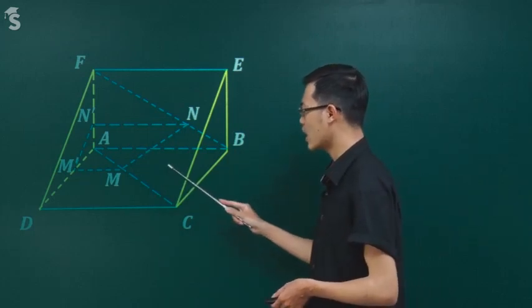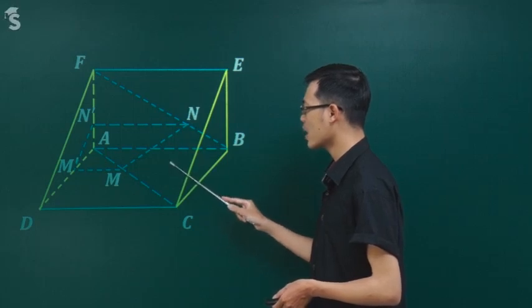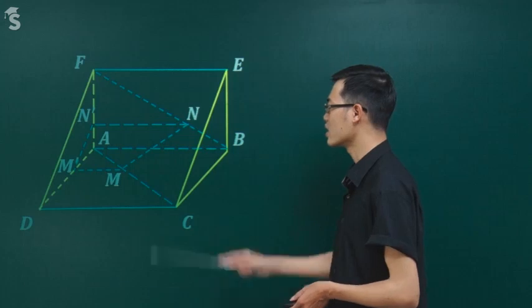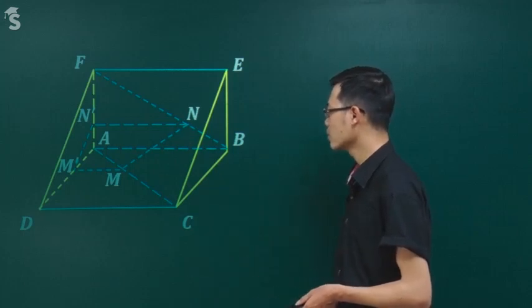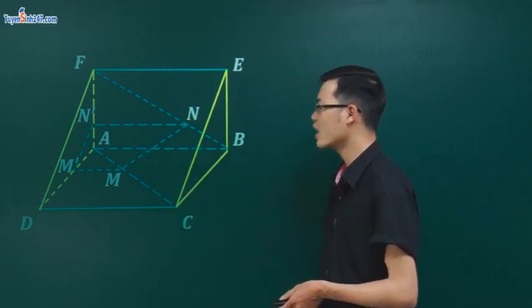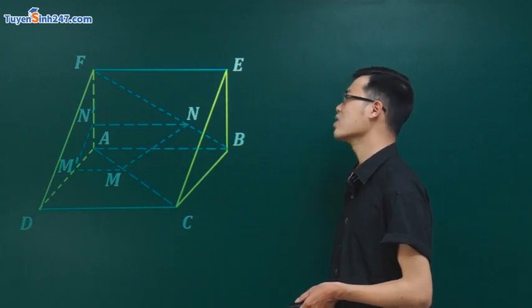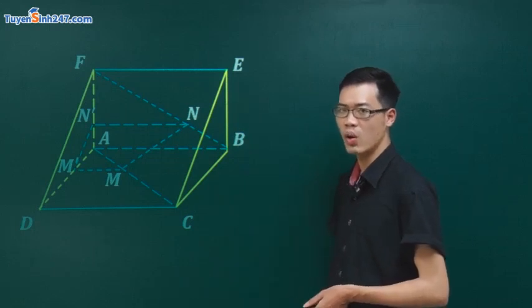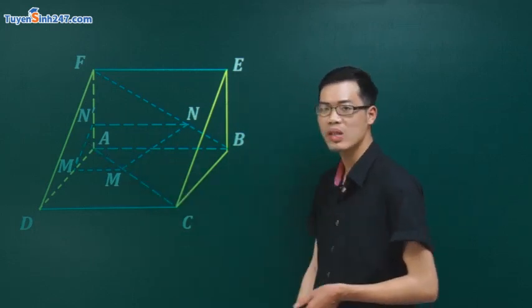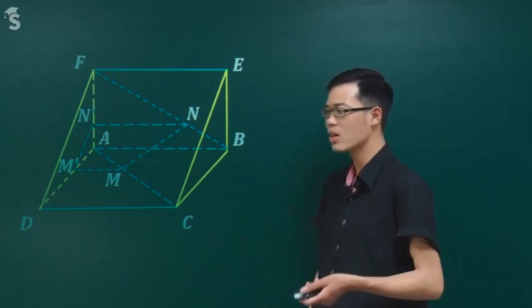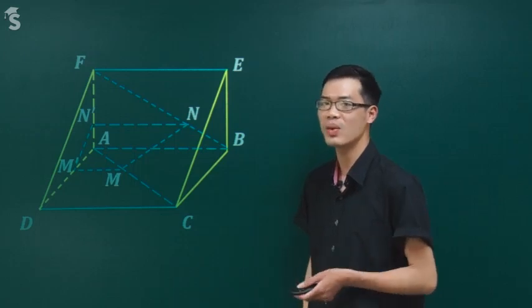Em có thể tưởng tượng rằng ba mặt: mặt này, mặt này, và cả mặt ngoài nữa, đều có thể tính là những hình bình hành. Thực ra chuẩn thì hai mặt này là hình vuông rồi. Hình EFDC cũng là một hình chữ nhật, đảm bảo tạo thành một khối lăng trụ. Nên hai đáy này chắc chắn song song. Nhưng đề không nói là cho lăng trụ, nên chúng ta phải chứng minh đúng phương pháp.